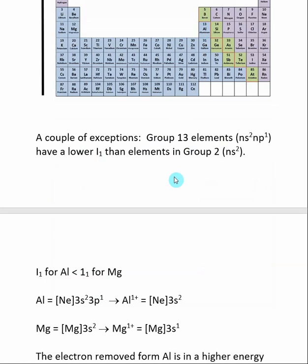We can see the reason for this discrepancy when we look at the electronic configurations of these groups. A good example of this is the difference between aluminum and magnesium.